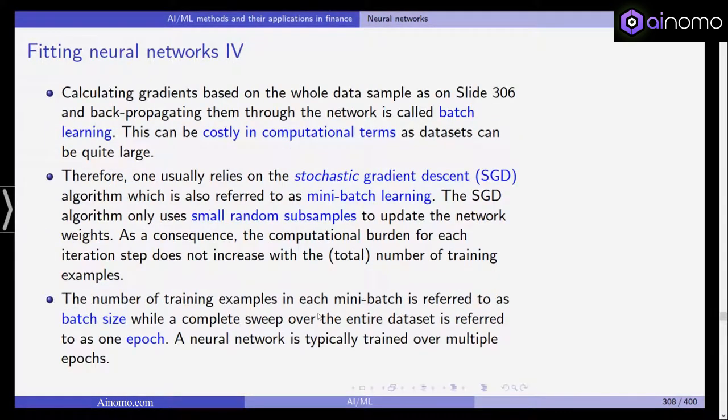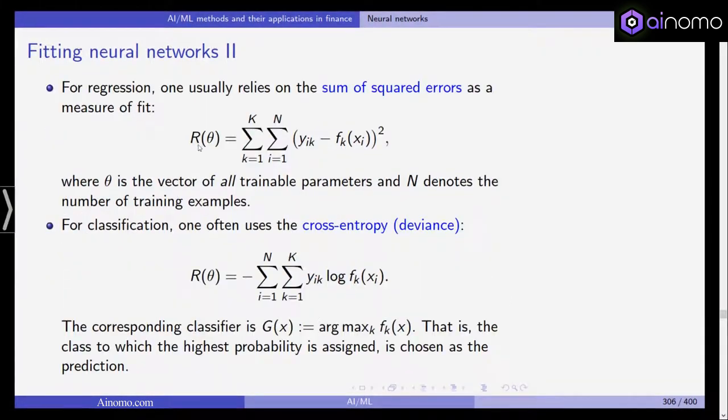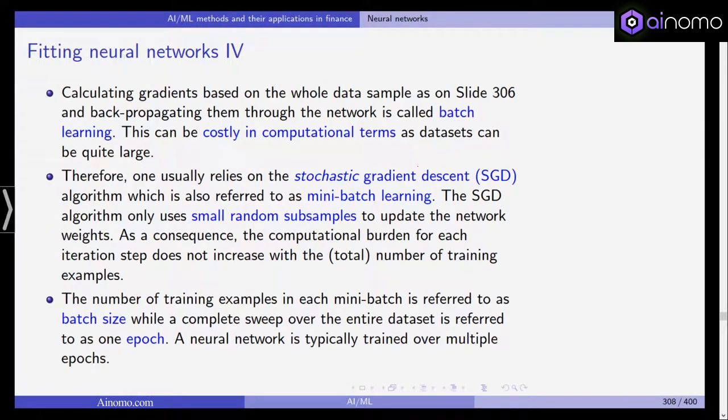Now calculating the gradient based on the whole data sample, be sure if you take a look at this function R here, you can see that this is based on all n observations. And to calculate the gradient, you have to go through all the data, all the training observations. Again, to calculate the gradient, you need to go through all n examples or training observations. And this is called batch learning. And this can be quite costly in terms of computational time. Because if the data set is quite large, computing the gradient also needs a lot of time.